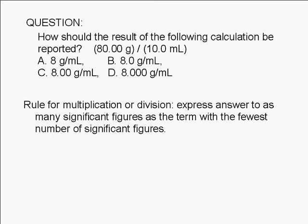When multiplying or dividing numbers with significant figures, the rule is to express the answer to as many significant figures as the term with the fewest significant figures.